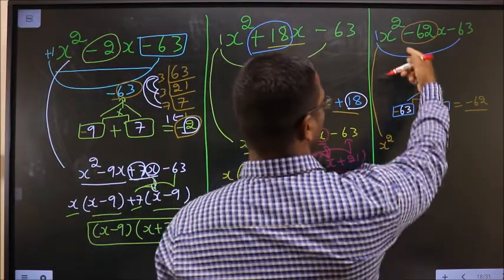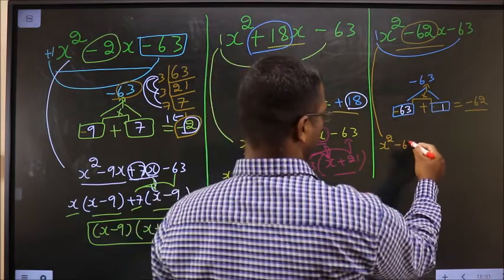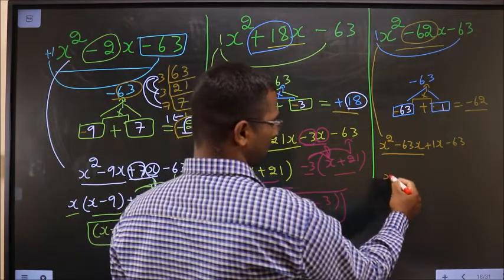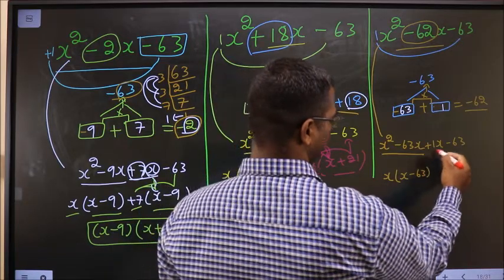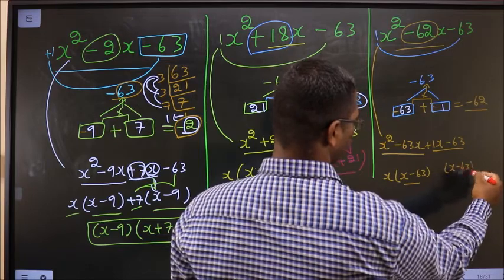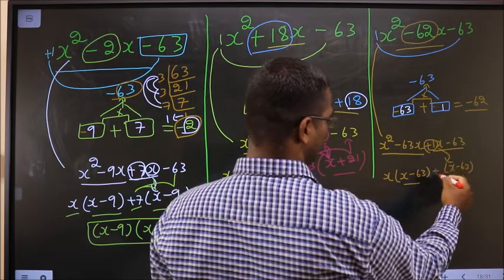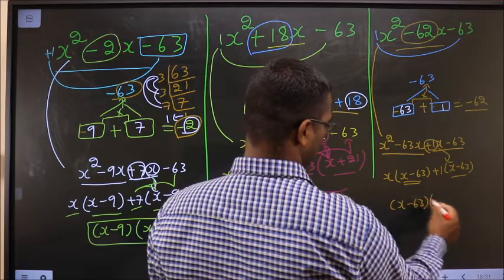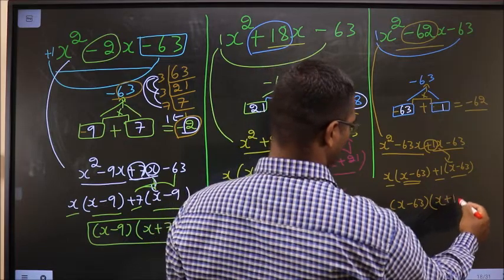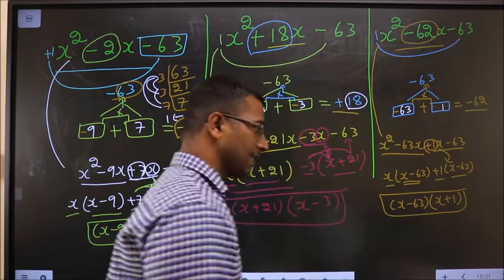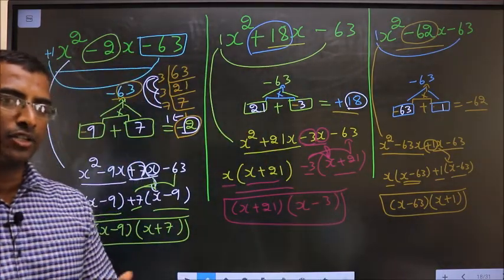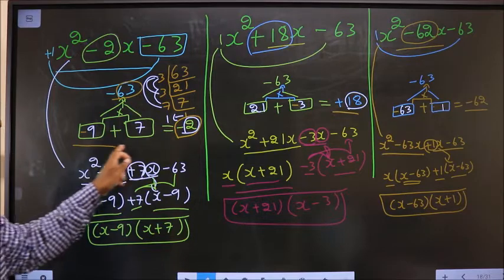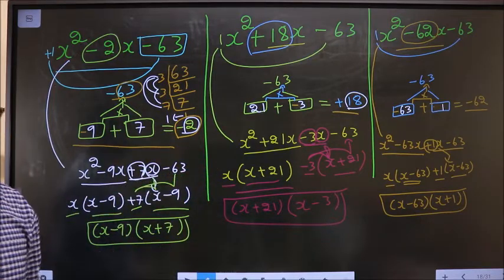The third expression: x² - 62x becomes x² - 63x + 1x - 63. What can I take common here? x — giving x(x - 63). Whatever I got here, here also I should get the same thing. x has gone inside means outside is plus 1. Take x minus 63 common, leaving x and plus 1. Thus I have factorized and the answer is (x - 63)(x + 1). I wanted you to understand the difference in all three of them — once you find these numbers, this is easy.